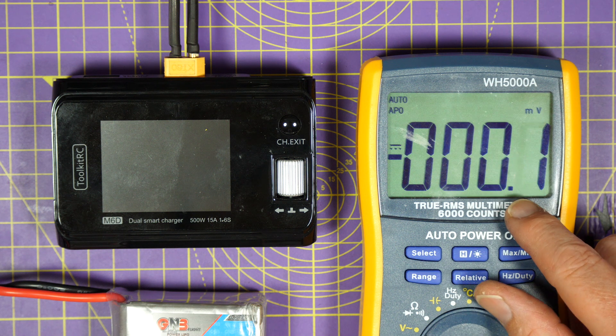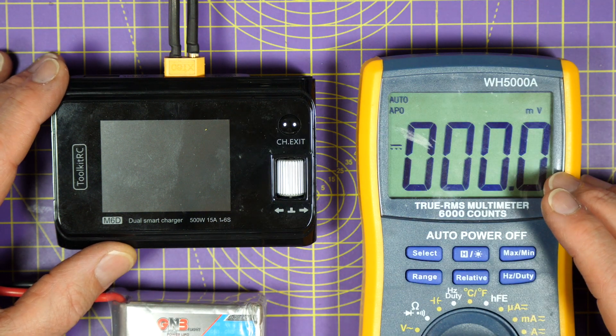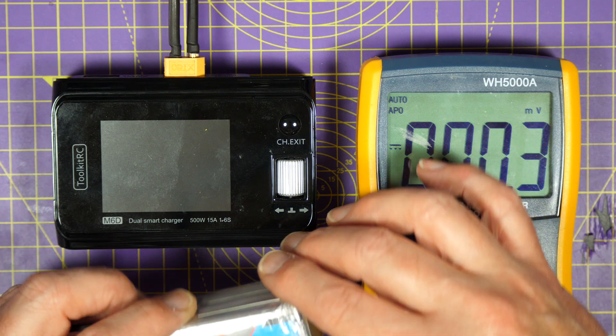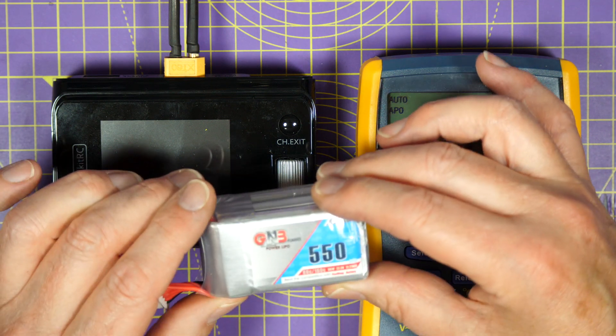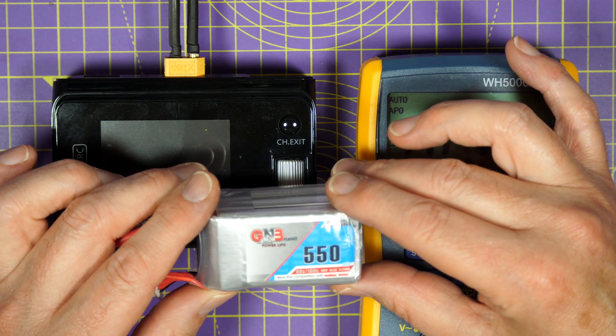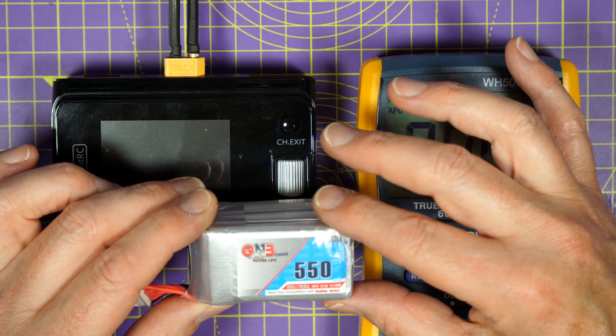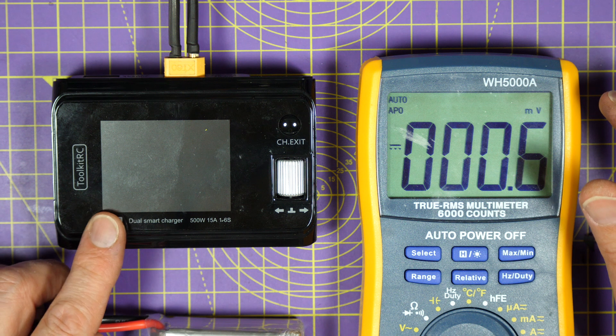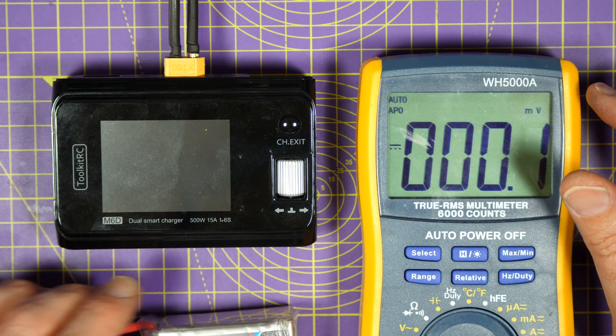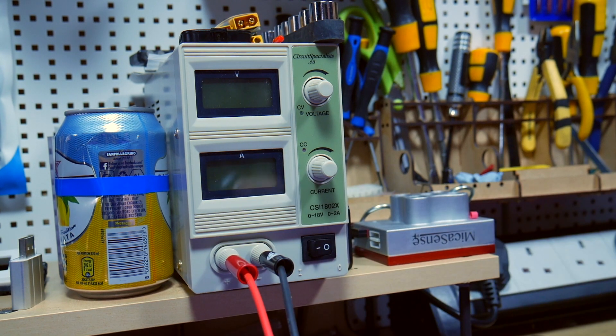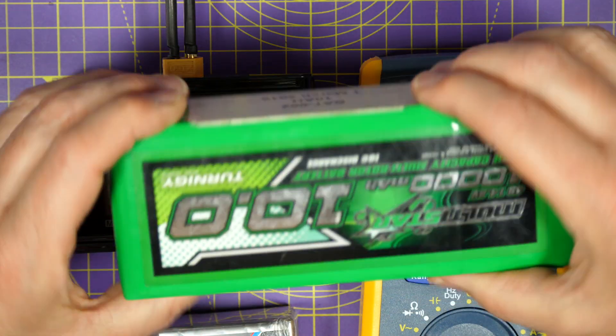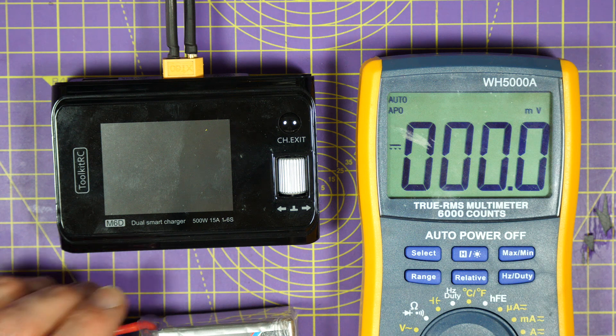To check the calibration of the charger you'll need a multimeter and ideally a 6s battery that's got some charge left in it. If you've only got 4s then you're probably not going to be charging anything bigger, so you'll only be able to calibrate the first four balance ports. Now I'm using my bench power supply to power this up, but you could equally use your external battery however you want to do it.